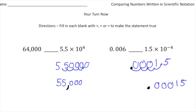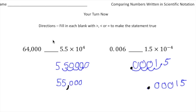Welcome back. Let's go over these practice problems. To save a little time, I've already done some of the work. The first problem compares 64,000 to 5.5 times 10 to the 4th power. If you notice, 5.5 times 10 to the 4th equals 55,000 — because I multiplied 5.5 times 10 four times, moving the decimal over four spots to get 55,000. And obviously 64,000 is bigger than 55,000, so the inequality sign will face this way.